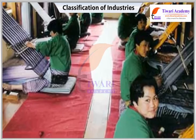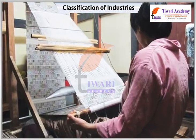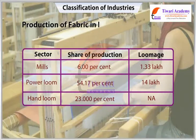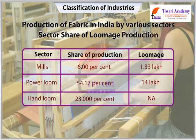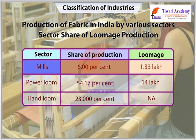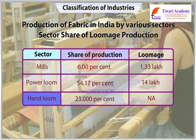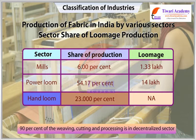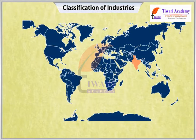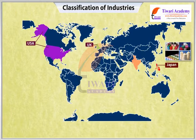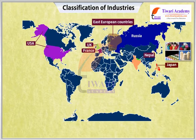The handspun khadi provides large-scale employment to weavers in their homes as a cottage industry. Production of fabric in India by sector: Mills account for 6 percent of production with 1.33 lakh looms; the power loom sector accounts for 54.17 percent with 14 lakh looms; the hand loom sector accounts for 23 percent. About 90 percent of the weaving, cutting, and processing is in the decentralized sector. India exports yarn to Japan, USA, UK, Russia, France, East European countries, Nepal, Singapore, Sri Lanka, and African countries.